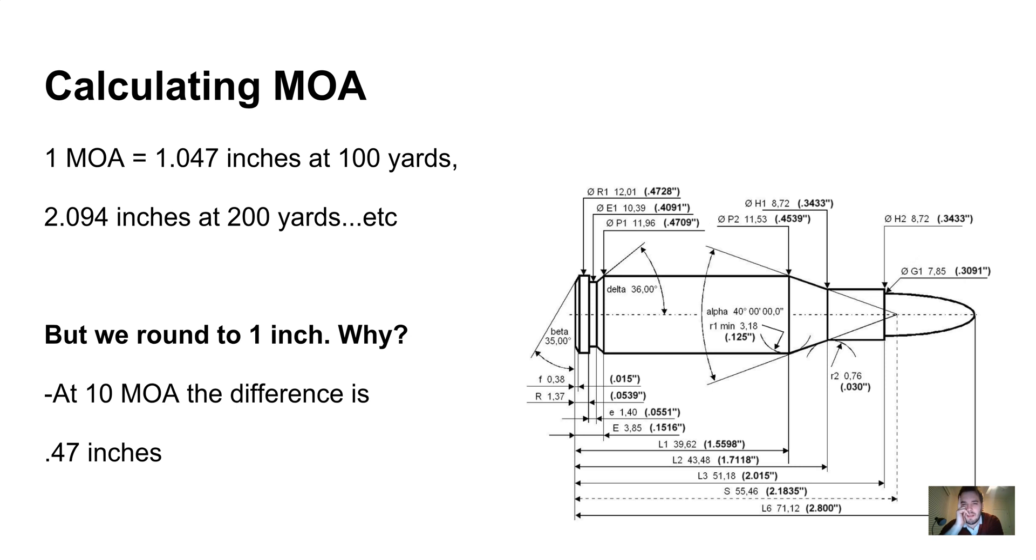At 200 yards, the difference is 0.094 inches, which is a fraction of the width of the bullet itself. Generally speaking, that's not going to make much of an impact. When you're getting into more complicated stuff, there are times when knowing the exact conversion will make a difference, but that's outside the scope of this introduction to MOA.